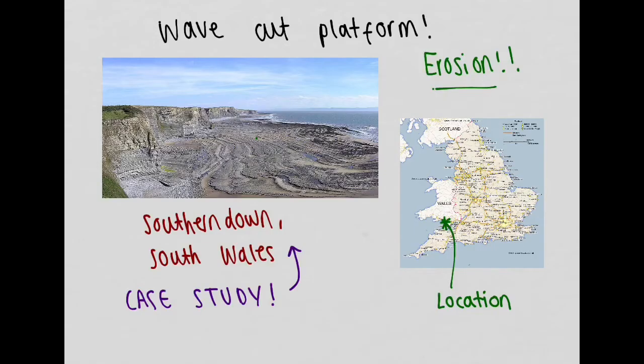The wave cut platform is an erosional landform, and your case study for this one would be Southern Down. Southern Down is located in South Wales, and for your location perspective, you can see that on the right hand side on the map, identified in green.